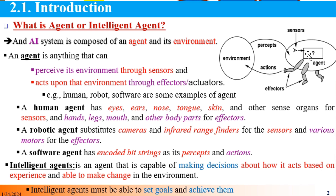Examples of an agent include: a human, a robot, and software.